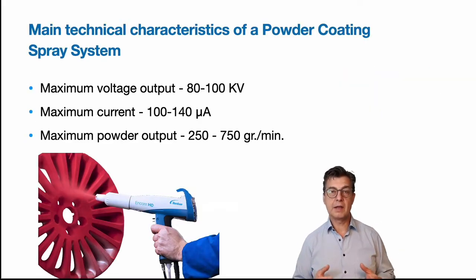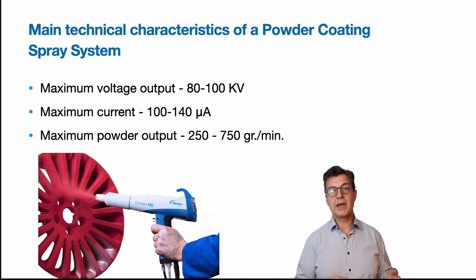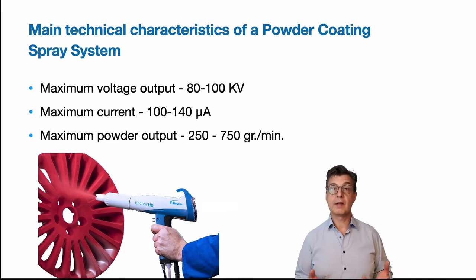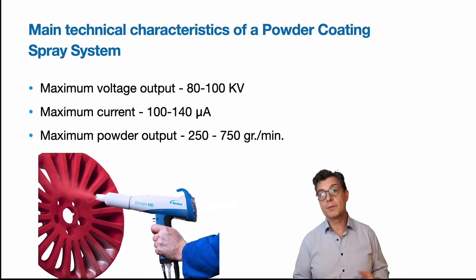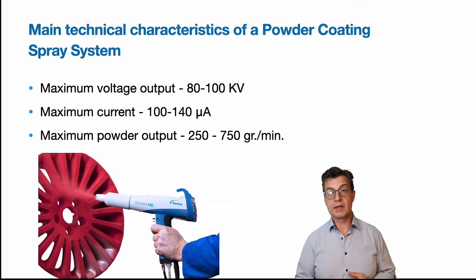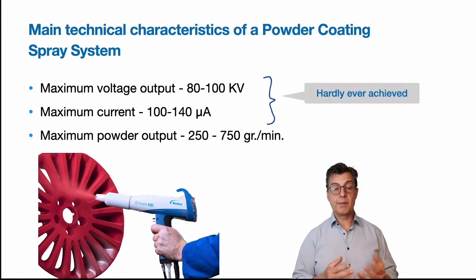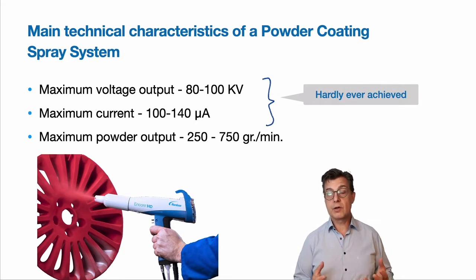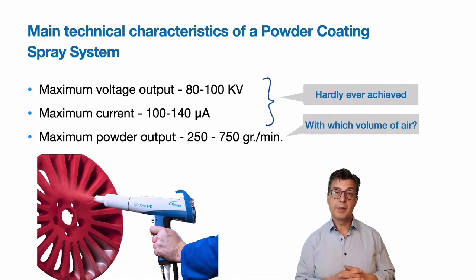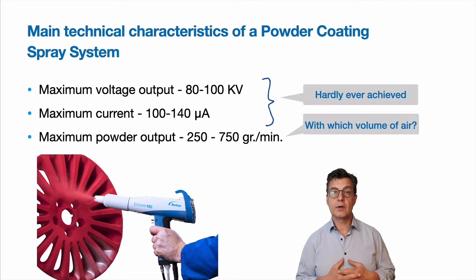Here you see the main stated parameters of a powder coating spray system. The maximum voltage can range anywhere from 80 to 100, sometimes 110 kilovolts. The maximum current can be anywhere between 100 and 140 microamps. And the maximum powder output can be declared anywhere between 250 grams a minute for a Venturi system up to 750 grams a minute for a system utilizing modern dense phase pump technology. The interesting thing is that the electrostatic parameters — the maximum voltage and the maximum current — are actually hardly ever achieved. And the maximum powder output is a function of the pump, but the importance is with which air volume this powder output is achieved.